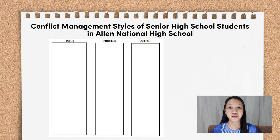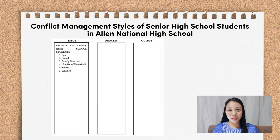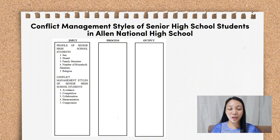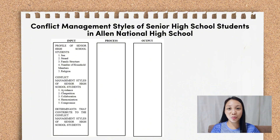What are you going to write in the figure for input? You have to list down the variables reflected in the research questions. Starting with the profile of senior high school students: 1. Sex, 2. Strand, 3. Family structure, 4. Number of household members, and 5. Religion. Moving to the second research question, that is the conflict management styles of senior high school students, and you list down the sub-variables: avoidance, competition, collaboration, harmonization, and compromise. You also need to include the last variable, which are the determinants that contribute to the conflict management styles of senior high school students.